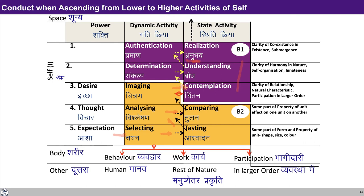Now we are trying to move from here to here. In the process of moving from lower activity to higher activity, contemplation starts getting activated, and with that understanding also starts getting developed. This keeps on going in the self, and gradually we are able to come to a stage when realization takes place. We can see how we are moving from bottom to top. So the first possibility: we are able to come to a stage when we realize the whole existence and coexistence. The process of development is like this — from expectation to thought, to desire, to contemplating right feelings, to even higher activities, until we realize the whole existence as coexistence.